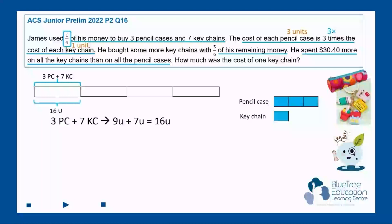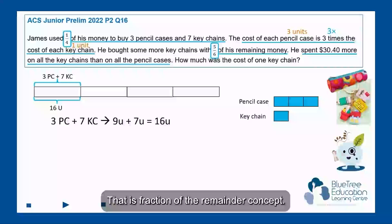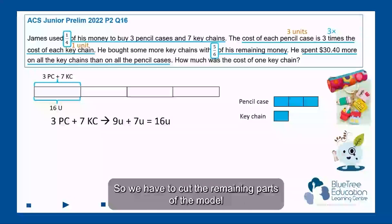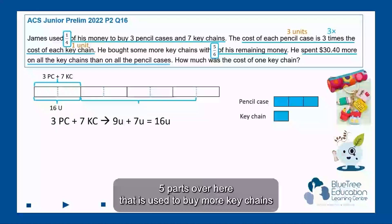And we can label this part as 16 units. Next, the question talks about using five-sixths of his remaining money—that is fraction of the remainder concept. So we have to cut the remaining parts of the model into smaller parts, and let's cut it. So we will label these five parts over here that are used to buy more keychains.